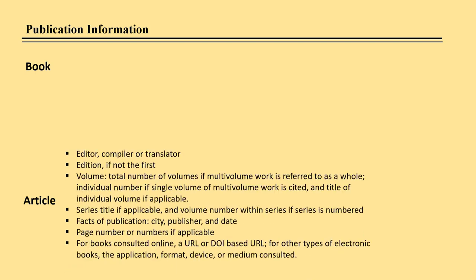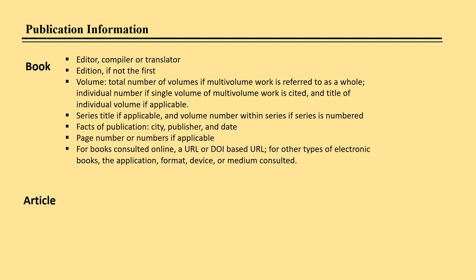Publication information can vary widely depending upon the item cited, which is why many examples and handouts are provided. The publication information for a book can include editors and translators, volume number, city of publication, publisher's name, and a URL or DOI if electronic.